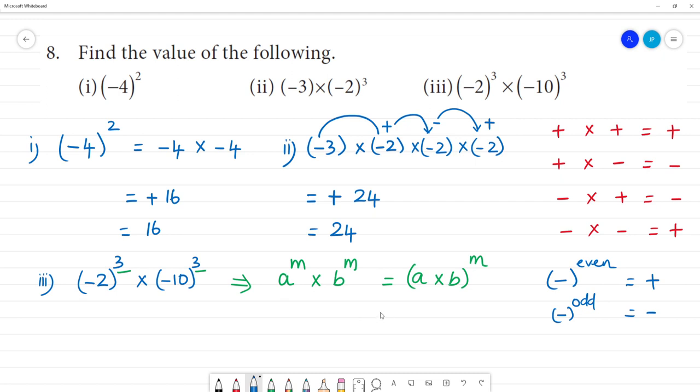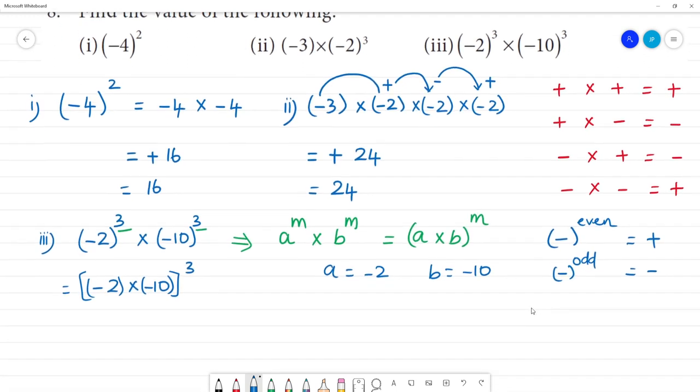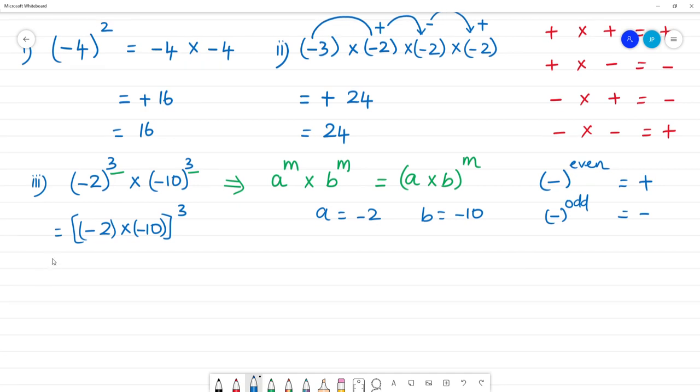So here, a is minus 2. What is b? b is minus 10. So what do we do? Minus 2 multiplied by minus 10, the whole to the power 3. Minus into minus is plus, 2 into 10 is 20, the whole to that power 3.